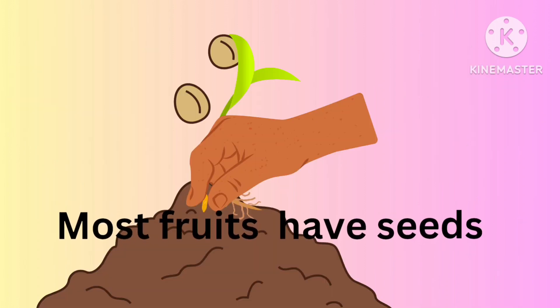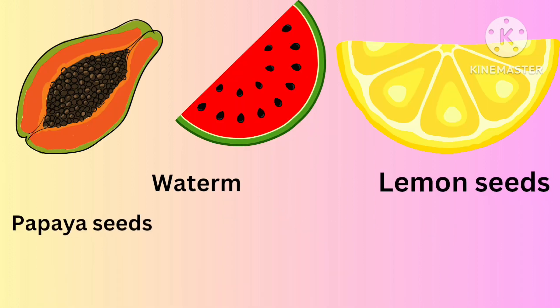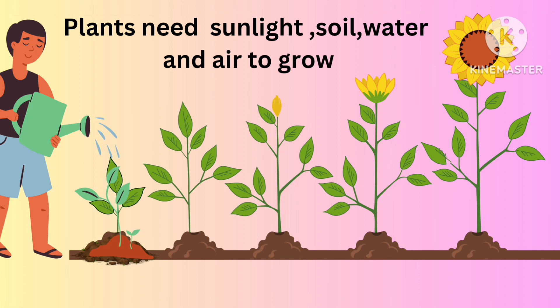Most fruits have seeds. Some of the fruit seeds are papaya seed, watermelon seed, and lemon seed. Plants need sunlight, soil, water, and air to grow. Growing plants in our house gives us fresh air and also makes our home look so pretty.